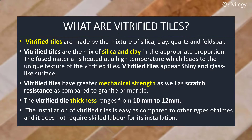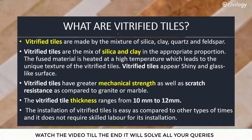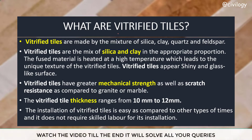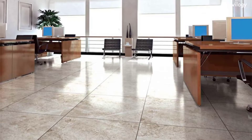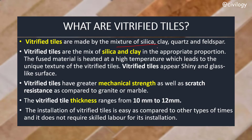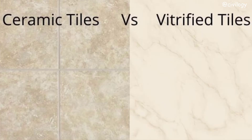What are vitrified tiles? First we have to know what vitrification is. Vitrification is a change of a substance from its natural state to a glassy type material. Vitrified tiles are a type of ceramic tile — ceramic tiles changed into a glassy type material. These tiles are made by a mixture of silica, clay, quartz, and feldspar. This fused material is heated at high temperatures, which leads to the unique texture of vitrified tiles, appearing shiny and glass-like.